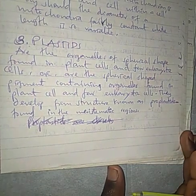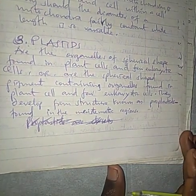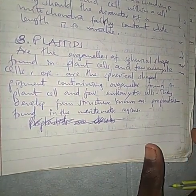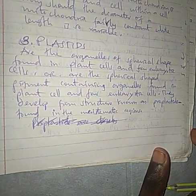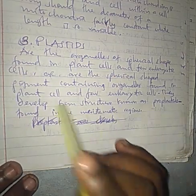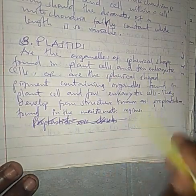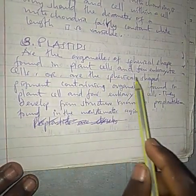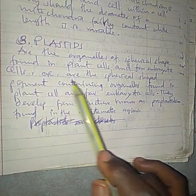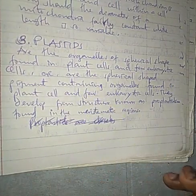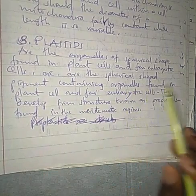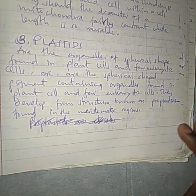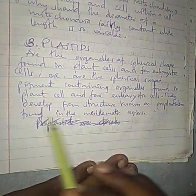Welcome back friends. In this video we shall look at Plastids. Plastids are spherical-shaped, pigment-containing organelles found in plant cells and a few eukaryotic cells. They are mainly found in plant cells.